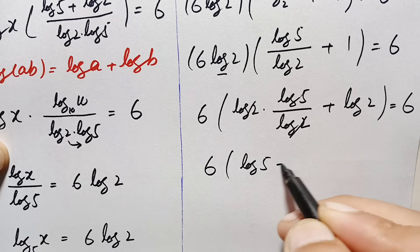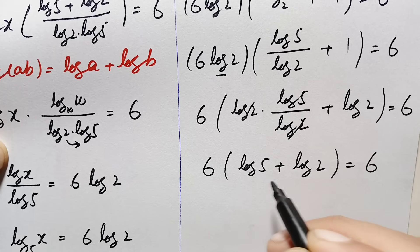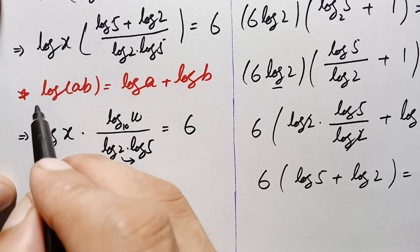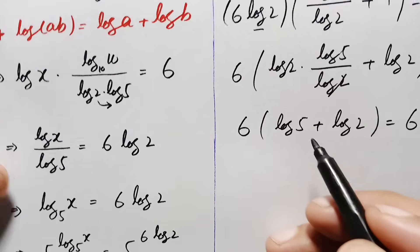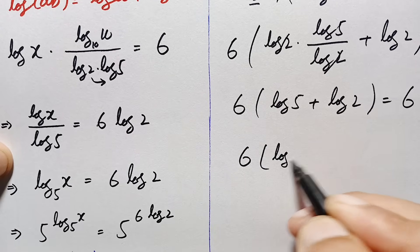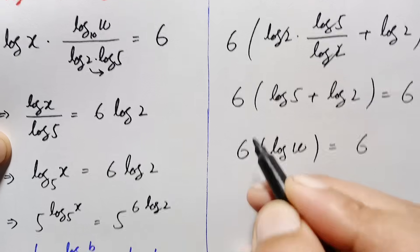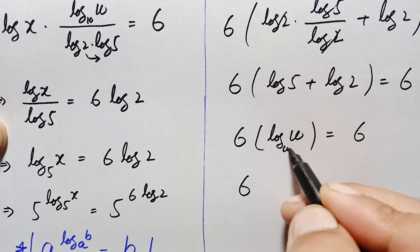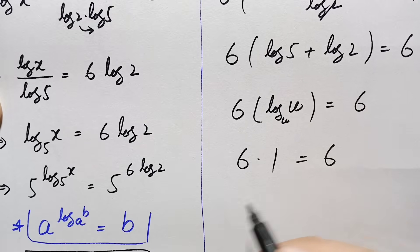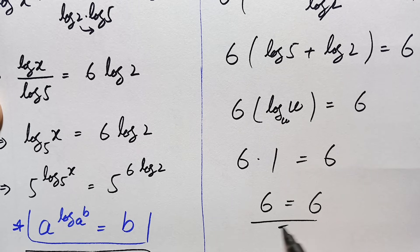This becomes: 6 times (log of 5 plus log of 2) is equal to 6. Using the product rule, log of 5 plus log of 2 is log of 5 times 2, which is log of 10. So this is 6 times log of 10, which equals 6 times 1, which equals 6. Since both sides are equal, the value is verified.